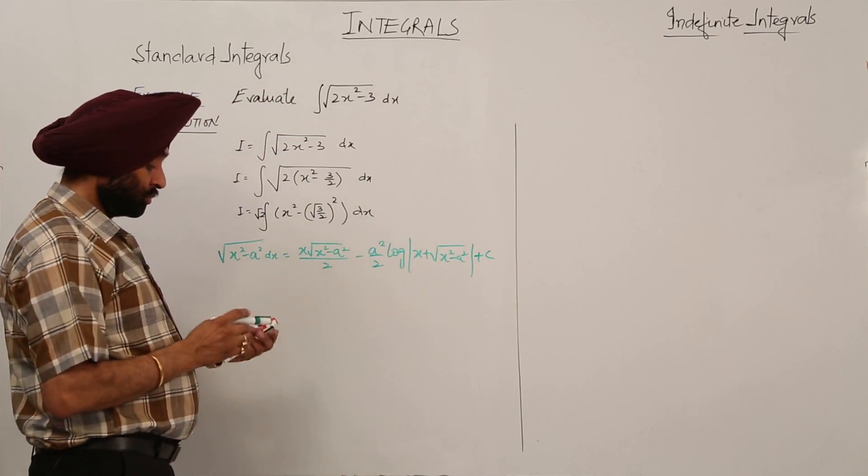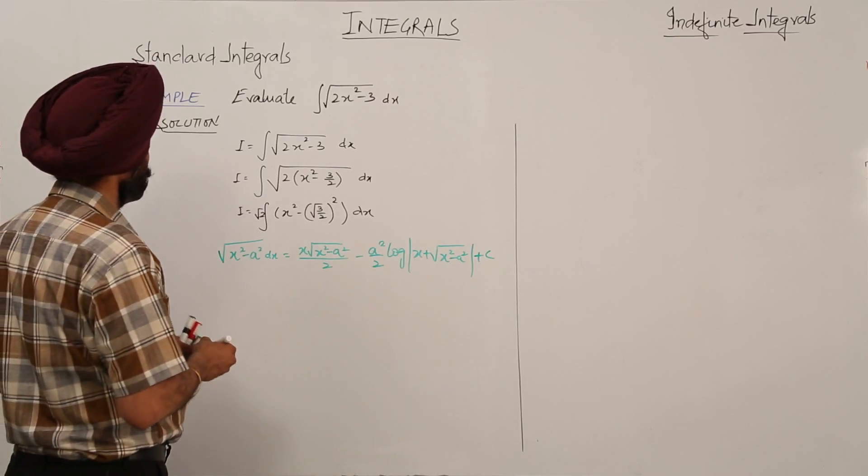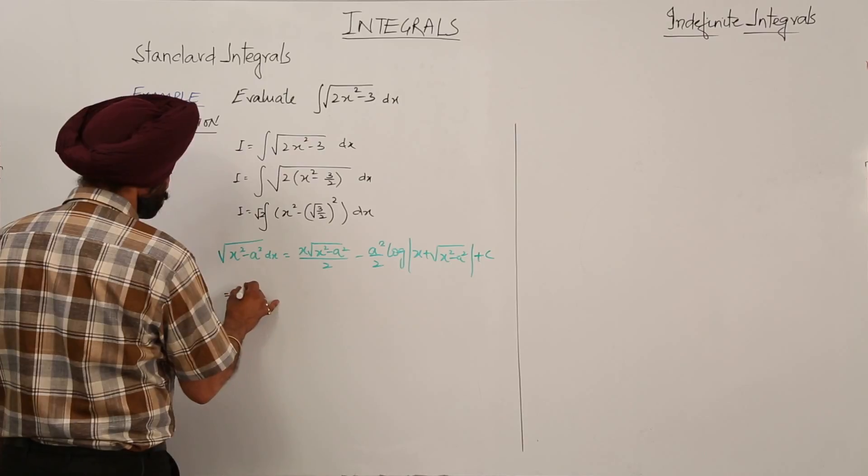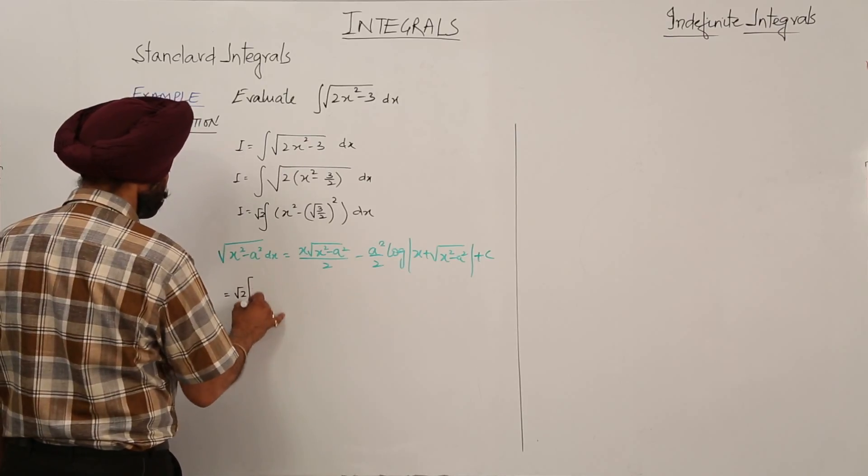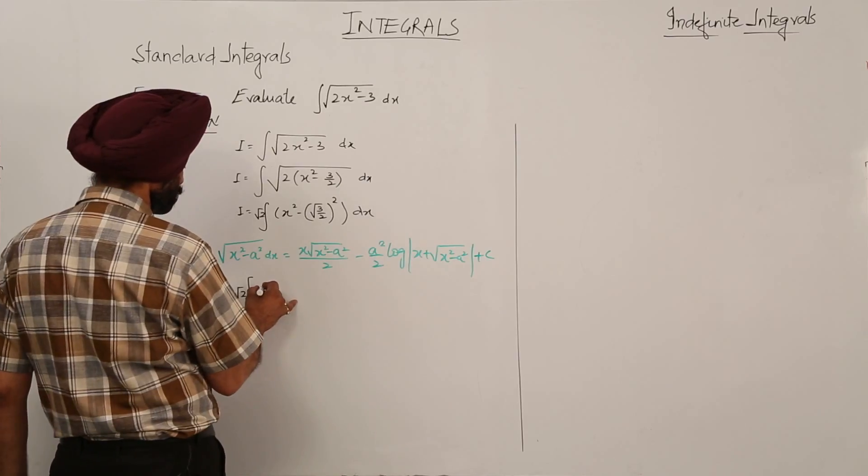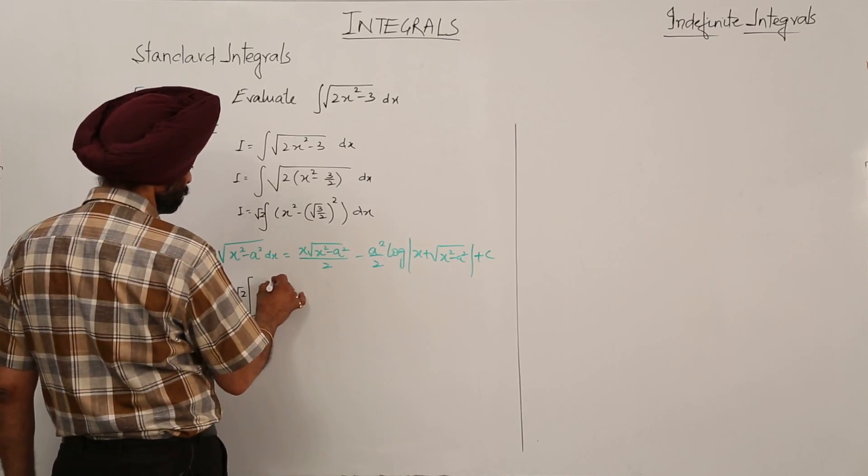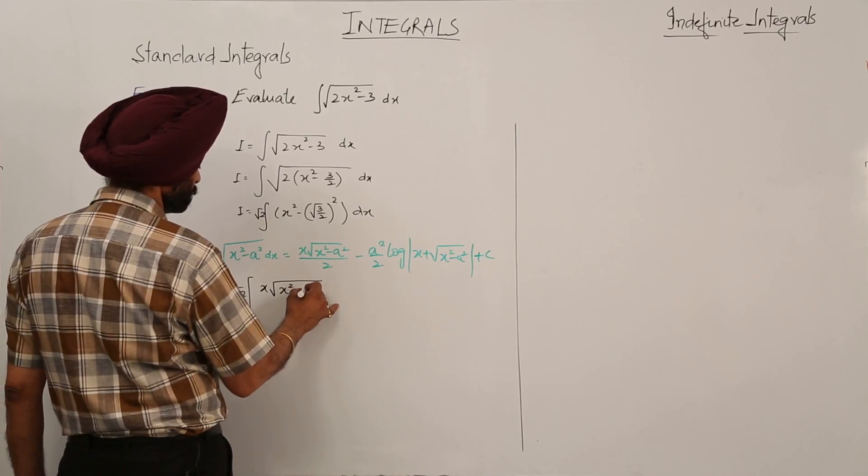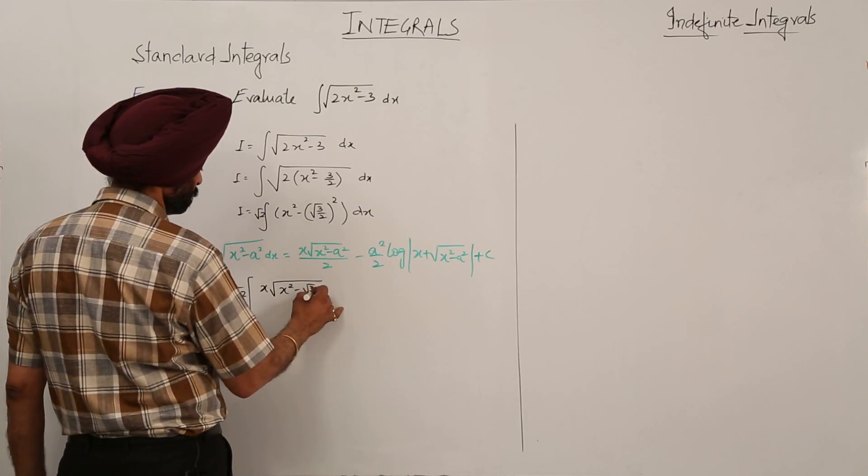Now we are going to use this formula for our identity part. Square root of 2 a is what? Root 3 by 2. So this becomes x square minus root 3 by 2 whole square upon 2